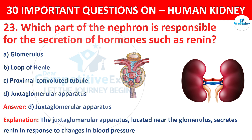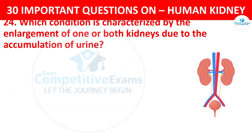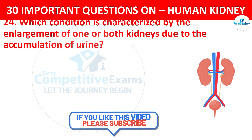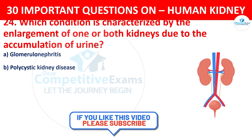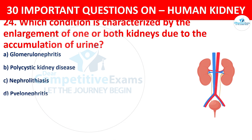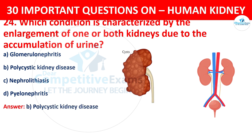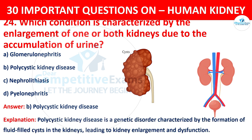Question number 24. Which condition is characterized by the enlargement of one or both kidneys due to the accumulation of urine? Your options are glomerulonephritis, polycystic kidney disease, nephrolithiasis, or pyelonephritis. The correct answer is B, that is polycystic kidney disease. Polycystic kidney disease is a genetic disorder characterized by the formation of fluid-filled cysts in the kidneys, leading to kidney enlargement and dysfunction.